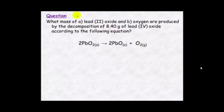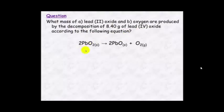Here's a question for you to have a go at. What mass of (A) lead oxide and (B) oxygen are produced by the decomposition of 8.4 grams of lead(IV) oxide according to the given equation? Pause this, have a go, and I'll pop the answers up and then run through the solution.